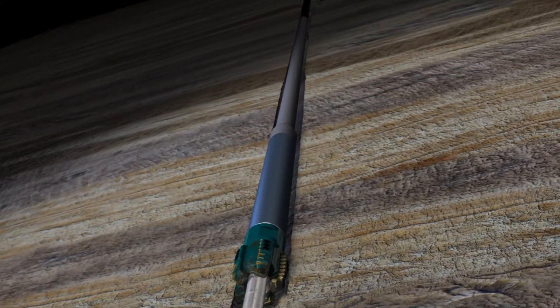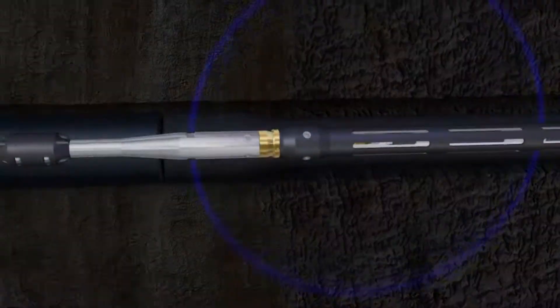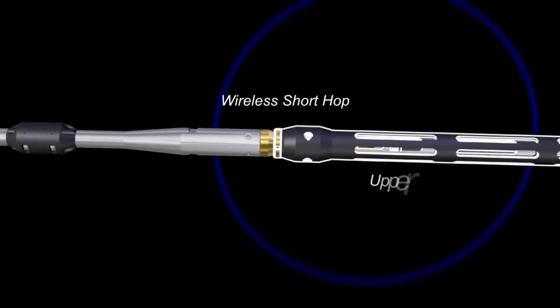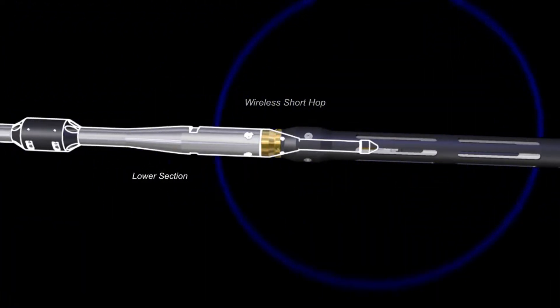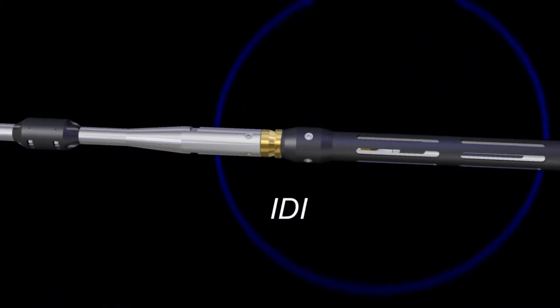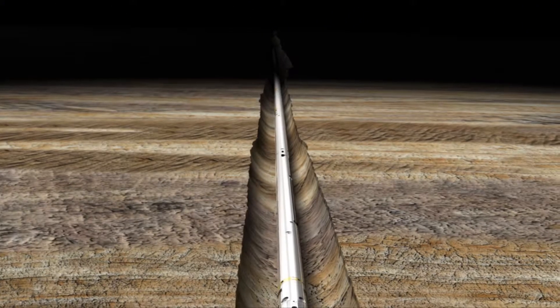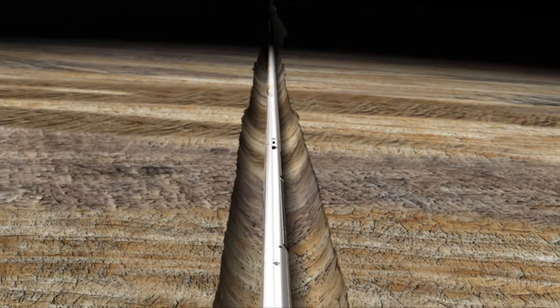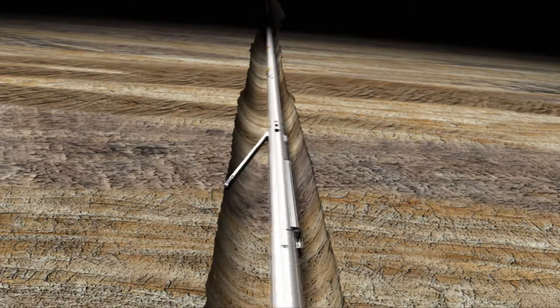Communication with the logging string is maintained through the wireline via a wireless short hop between the upper section and the lower section of the intelligent deployment interface tool or IDI. This ensures tool functionality and proper tool placement within the BHA before deployment.